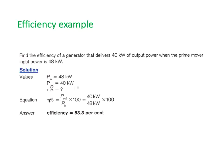Let's do a quick example. Find the efficiency of a generator that delivers 40 kilowatts out when the prime mover inputs 48 kilowatts. So we put 48 in but only got 40 out, losing 8 kilowatts in losses. Using our formula, percent efficiency equals P_out divided by P_in times 100. So 40 divided by 48, multiplied by 100, gives us 83.3 percent efficiency. So 83.3 percent of what we put in comes out as electrical power.